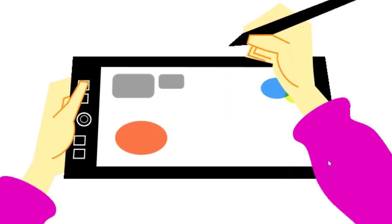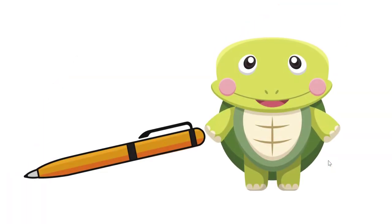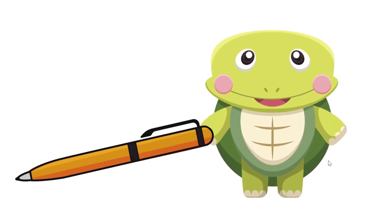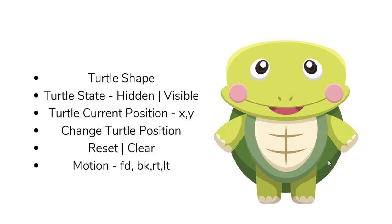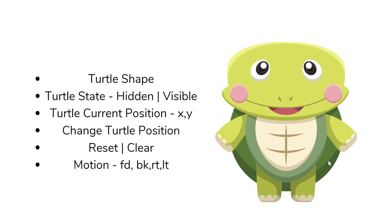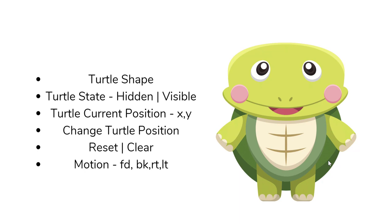There are two things we will be looking at: one is pen and the other is turtle. We have already seen how we can control the shape of the turtle. We can also control whether we want to see the turtle or not, and we can fetch the current position of the turtle, since the turtle is on a 2D plane of XY — fetching the position means fetching the XY coordinate.